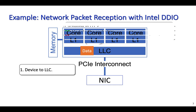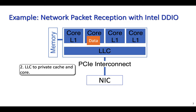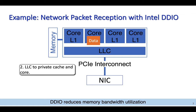With that, the core can later fetch data from the LLC instead of DRAM. DDIO can potentially eliminate all the memory bandwidth utilization for data reception from an I/O device.